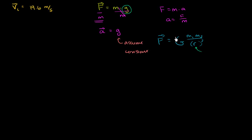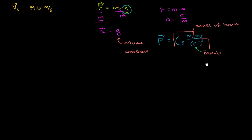Little g combines all those terms together — big G, mass of the Earth, and the radius of the Earth squared. So while the force of gravity does change a little bit, for objects thrown up in our atmosphere we can assume it is constant at 9.8 meters per second squared, rounded to the nearest tenth.